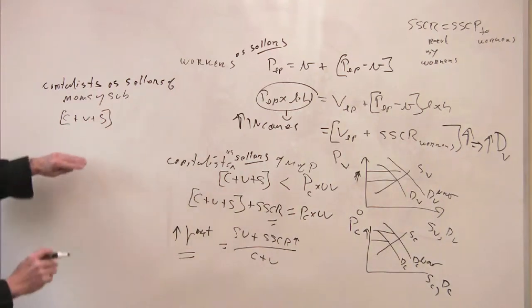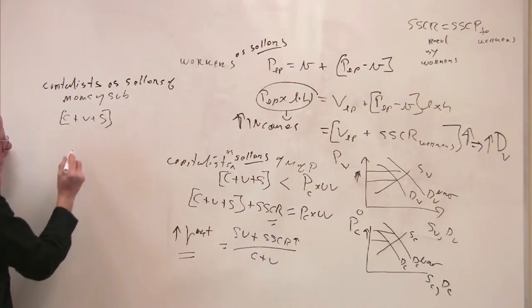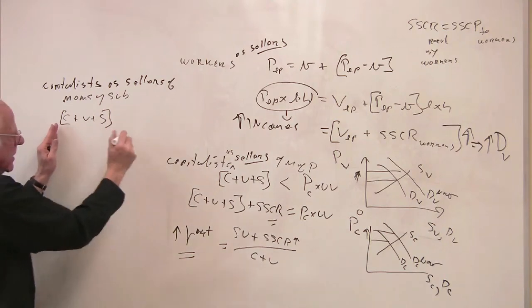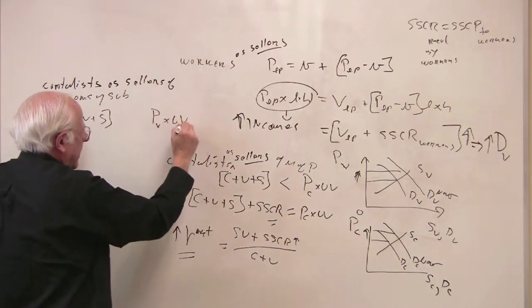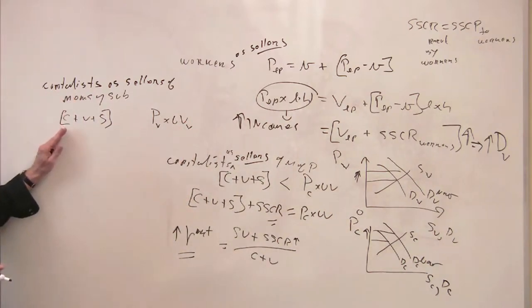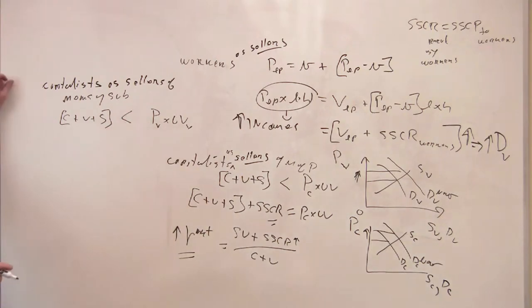Remember now, this is the embodied labor in the C plus the living labor in the V plus S. They can sell these commodities at a price for V higher than what it costs. So the inequality goes this way. That's how they benefit.